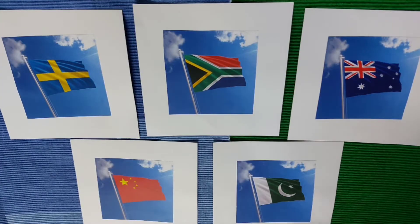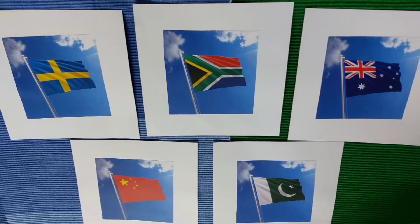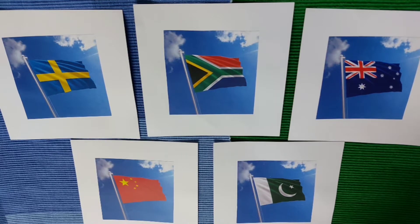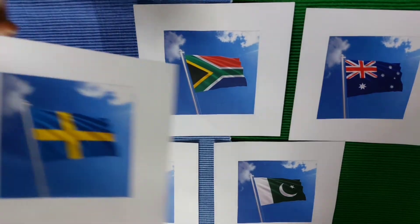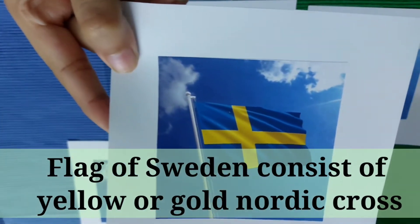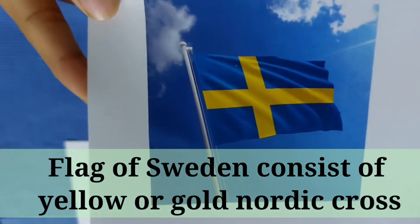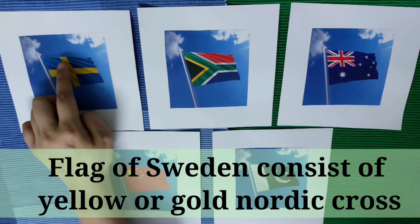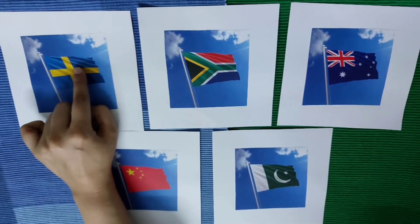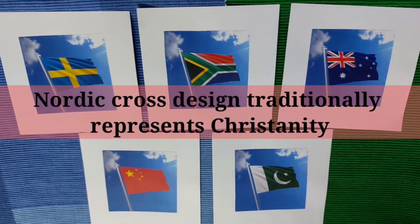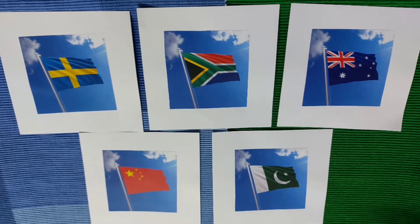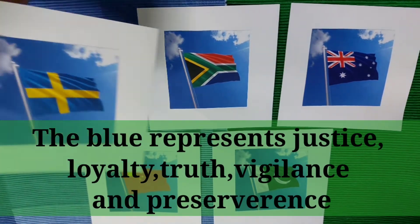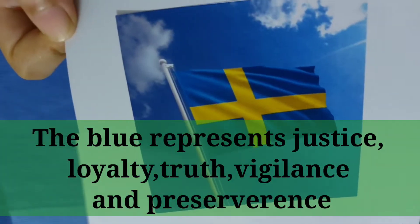Few people know about the stories behind the flag, so today we are going to tell you about the stories of the flags. This one is the Sweden flag. The flag of Sweden consists of a yellow or gold Nordic cross. The Nordic cross design traditionally represents Christianity, and the blue represents justice, loyalty, truth, vigilance, and perseverance.